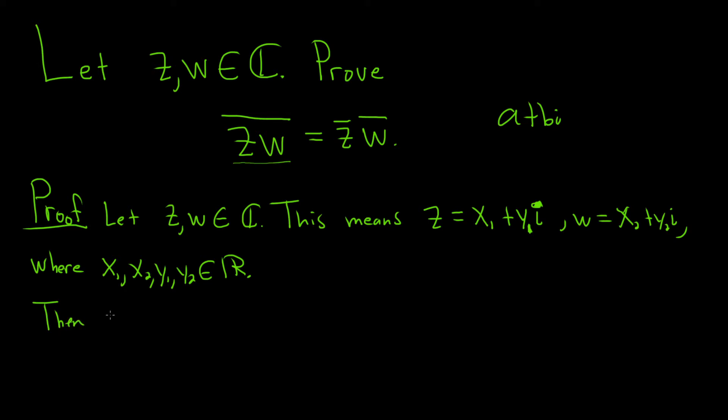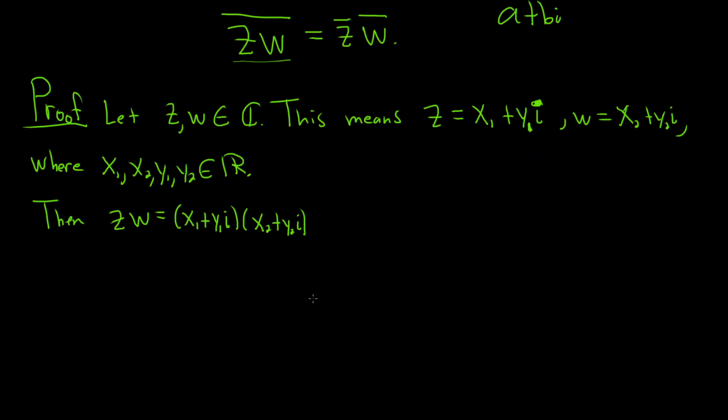So, then, zw is equal to x1 plus y1i times x2 plus y2i. So, let's see, if we multiply these, we can just distribute. So, x1 times x2 will just be x1x2. And then, x1 times the last piece here will give us x1y2i. Then, we do this one times this one. So, it'll give us y1x2i. And then, the last one is going to give us plus y1y2i squared.